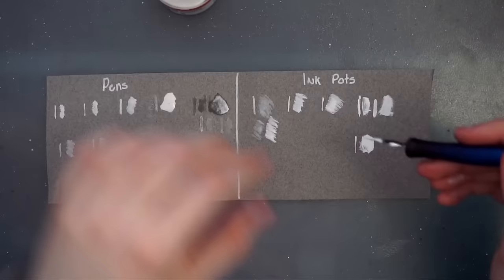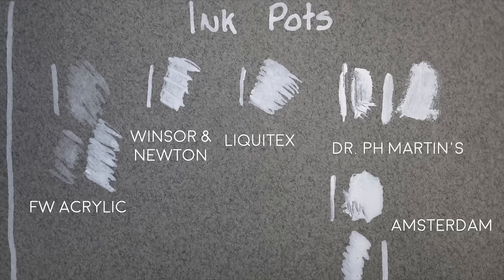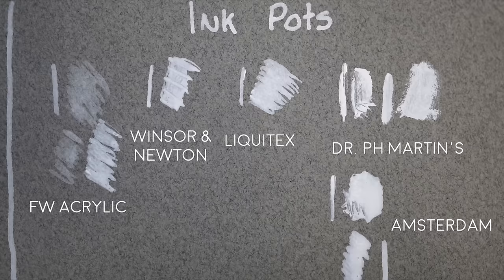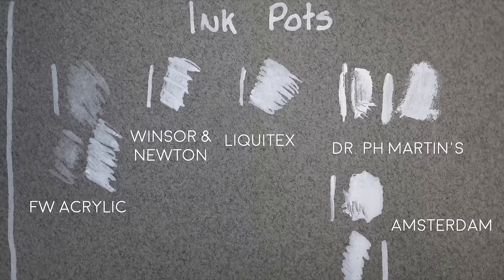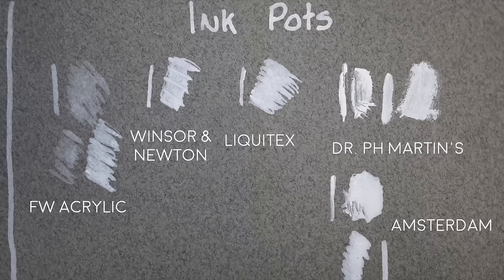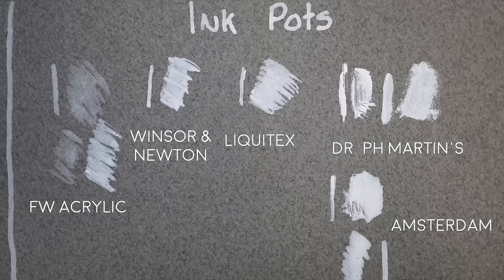I actually accidentally spilt a lot of this ink, so the ink level was not as high on this pot as it was with the others, which is probably why I wasn't getting enough on the pen. And here's the result of the fully dried swatches for the ink pots. As you can see, all of these are pretty opaque. I'm actually surprised that the FW Acrylic Ink isn't more pigmented.